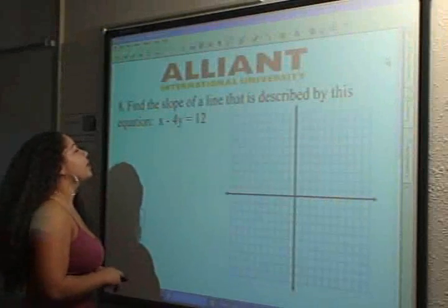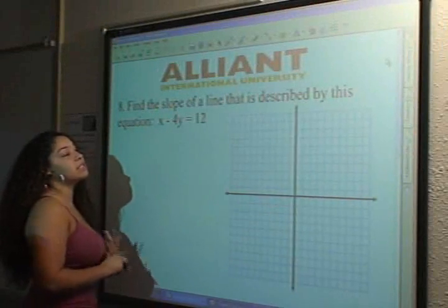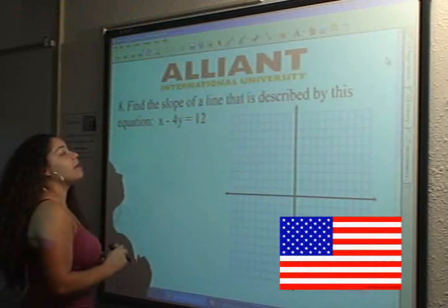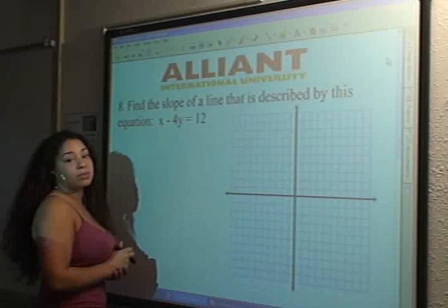How you doing there? Here we have an equation that deals with the line and slope. It says find the slope of a line that is described by this equation: x minus 4y equals 12.